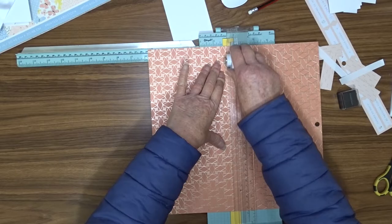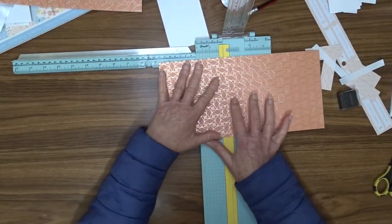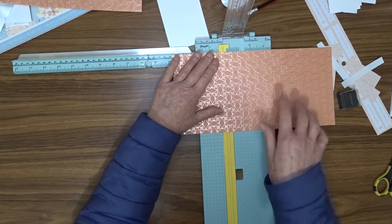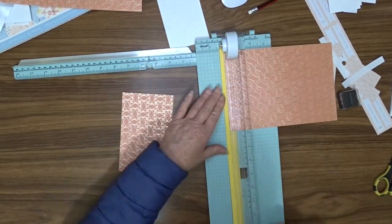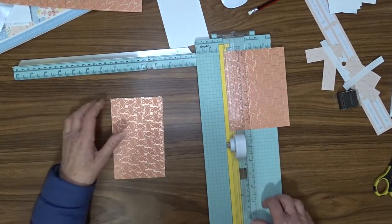My card front is six by four, so I'm going to cut a piece of this decorative paper that is five and three quarters by three and three quarters. I'm going to cut three of them, one for the front of the card, one for the inside front, and one for the inside back.